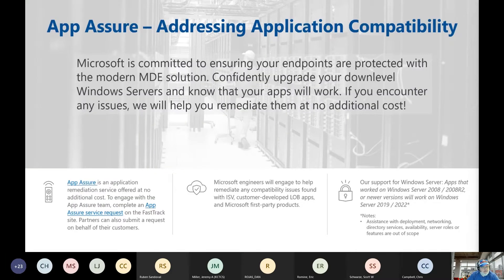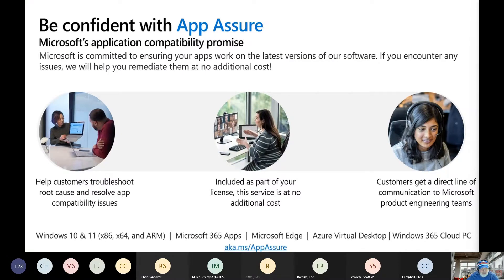App Assure is addressing application compatibility. Microsoft is committed to ensuring your endpoints are protected with a modern MDE solution. Confidently upgrade your down-level Windows service and know that your apps will work. If you encounter any issues, we will help you remediate them at no additional cost. The URL is aka.ms/appassure. If you have Premier support, reach out to your CSAM — your customer success account manager. Even if you don't have Premier support, you can still go to the portal, which brings you to the FastTrack portal where one of the resources is requesting App Assure.